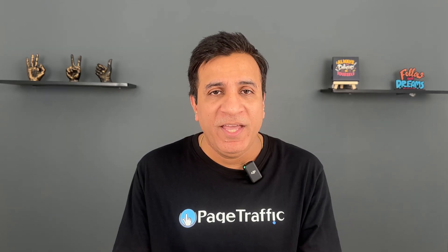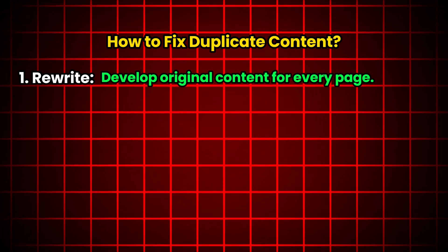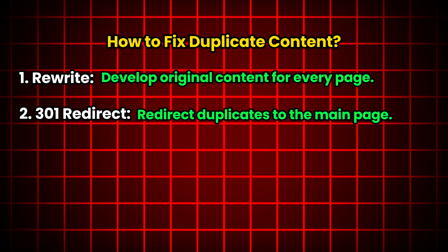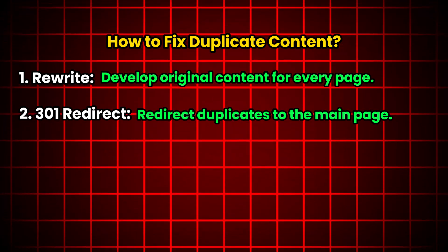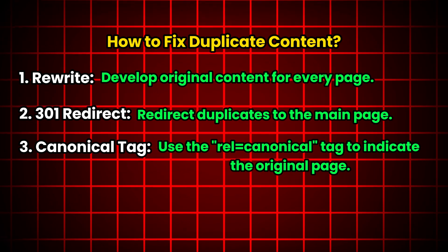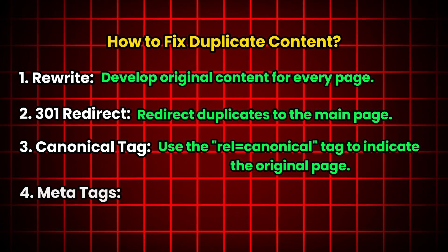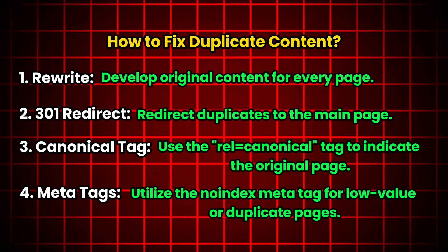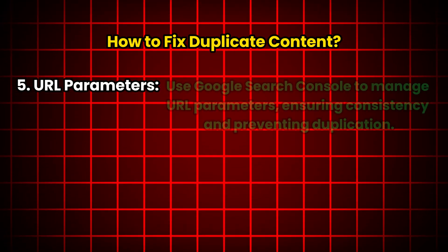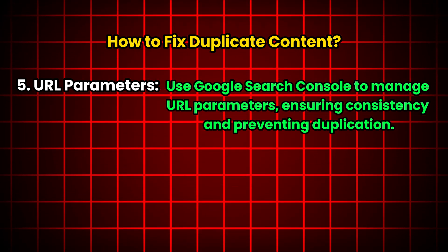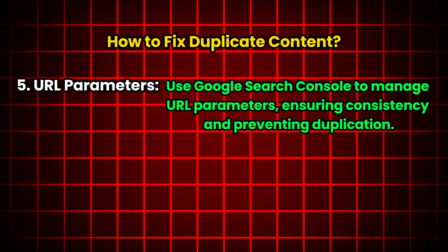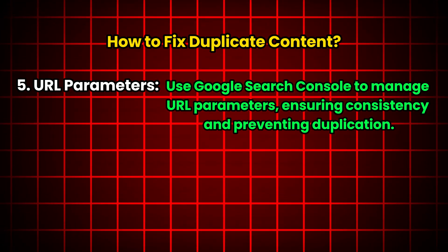How to fix duplicate content — here are your options. Rewrite: create unique content for each page — this is the best long-term solution. 301 redirect: if you have multiple pages with the same content, redirect the duplicates to the main page. Canonical tag: use the rel=canonical tag to tell search engines which page is the original. Meta tags: use the noindex meta tag on duplicate or low-value pages to prevent them from being indexed. URL parameters: configure URL parameters in Google Search Console to specify how they should be treated, and use a consistent URL structure to avoid creating multiple URLs for the same content.